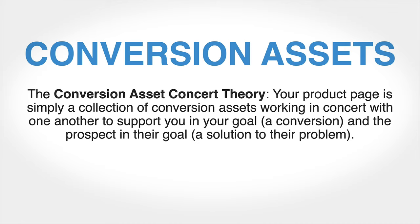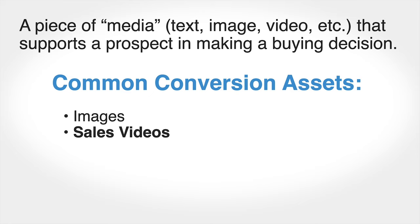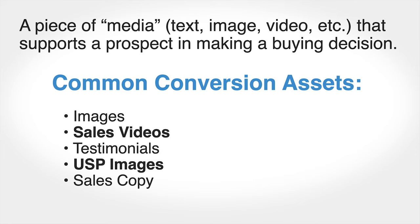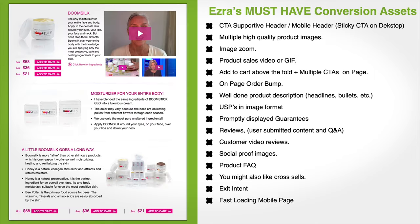I've got a theory called the conversion asset concert theory: your product page is simply a collection of conversion assets that work in concert with one another to support you in your goal—a conversion—and your prospect in their goal—a solution to their problem. A conversion asset is just a piece of media—an image, text, or video—that supports a prospect in making a buying decision. That includes images, sales videos, testimonials, unique selling propositions, sales copy, and more. I have a list of all the must-have conversion assets you need on your product offer page, and I'm going to take you through building a winning desktop and mobile product offer page step by step.